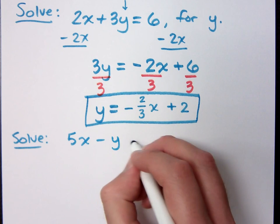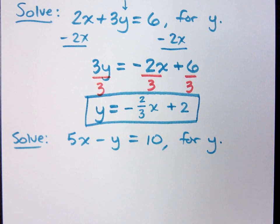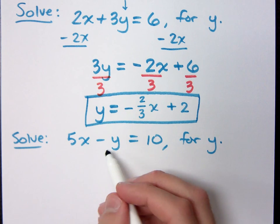5x minus y equals 10. I want you to solve this guy for y. What step would you take to get y by itself? Subtract 5x. Subtract 5x.